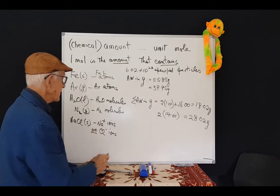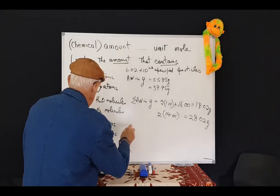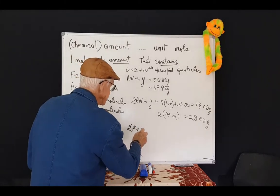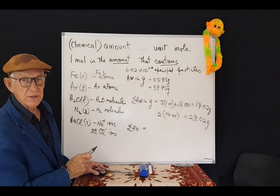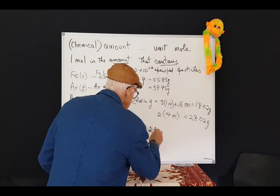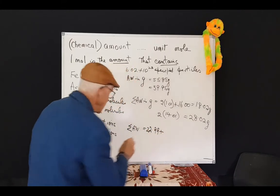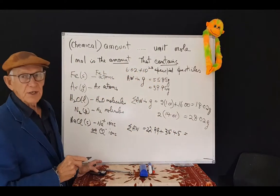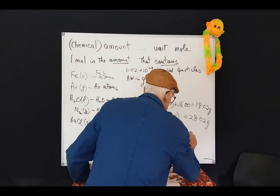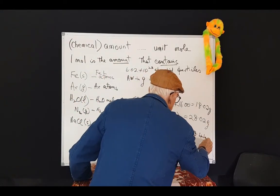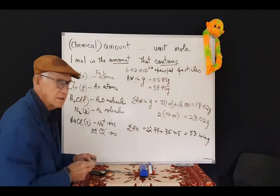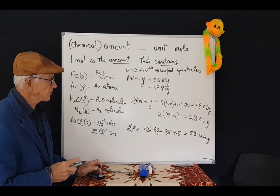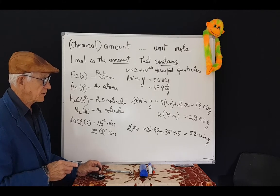And if we go down to here, then we're talking about the sum of the atomic weights of the atoms in the formula. And in this case, sodium 22.99 and chlorine 35.45, that's a total of 58.44 grams. So we're going to use that, and chemists use that an awful lot. Does that make sense, Ozzy?